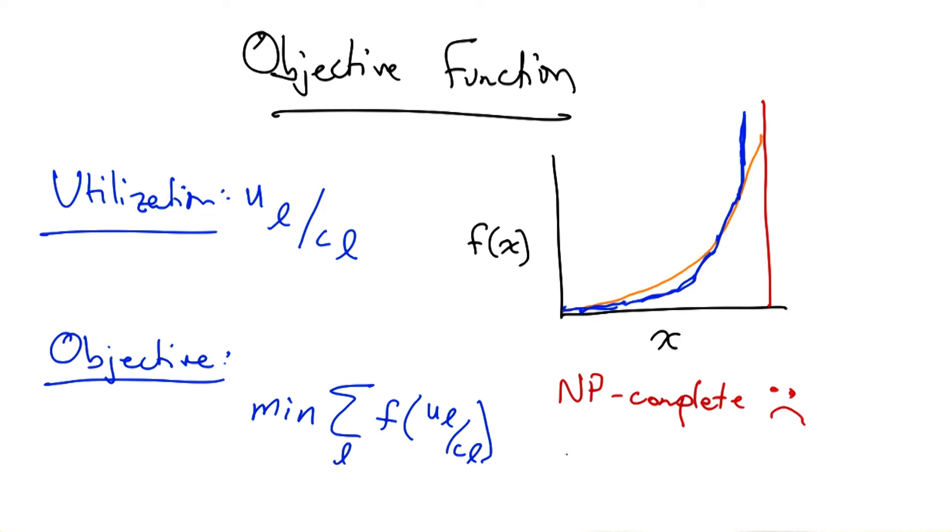Unfortunately, solving this optimization is still NP complete, which means that there's no efficient algorithm to find the optimal setting of link weights, even for simple objective functions.